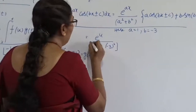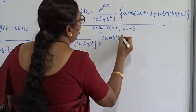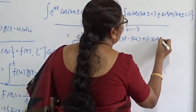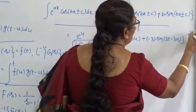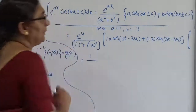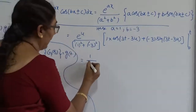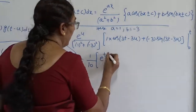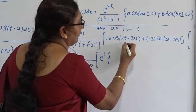So the integral becomes: e to the power u divided by (1 squared plus (minus 3) squared), times [1 times cos(3t minus 3u) plus (minus 3) times sin(3t minus 3u)], evaluated from 0 to t. The denominator is 1 plus 9 equals 10, giving a factor of 1/10. Applying the upper limit u = t: 3t minus 3t = 0, so cos 0 = 1 and sin 0 = 0.